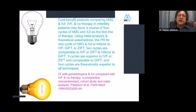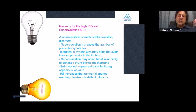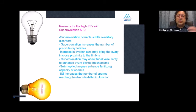A cost-benefit analysis shows that three cycles of IUI are superior to IVF or ZIFT and comparable to GIFT, and four cycles of IUI are theoretically superior to older techniques. IUI is always done in conjunction with fertility injections because giving these injections to produce multiple eggs — called superovulation — corrects subtle ovulatory disorders, makes the ovaries larger bringing them into closer proximity to the fimbria, may affect tubal vascularity, swim-up techniques enhance fertilizing capacity of sperms, and IUI increases the number of sperms reaching the ampulo-isthmic junction.